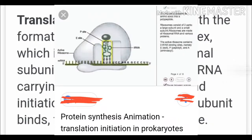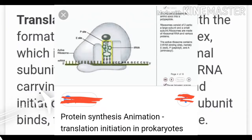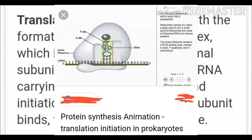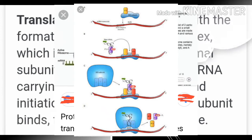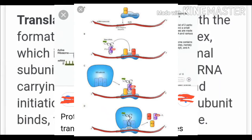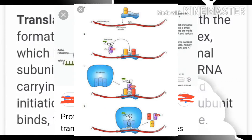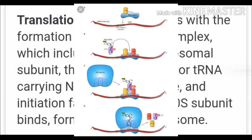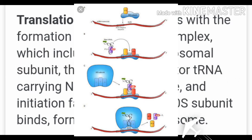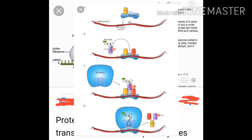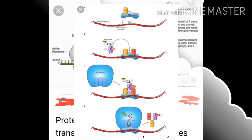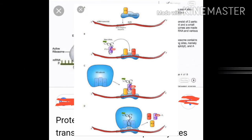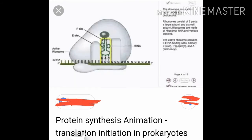mRNA also has additional sequences that are not translated, referred to as untranslated regions (UTR). These are present at both the 5' end before the start codon, and at the 3' end after the stop codon. The sequence from UTR to UTR flanks the coding region, and the portion after the stop codon is not translated.